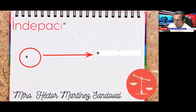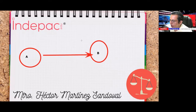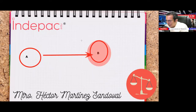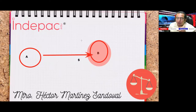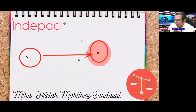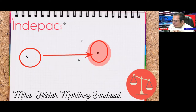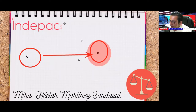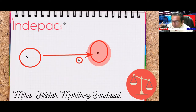Primer supuesto: B paga puntualmente su renta, siempre la paga puntualmente. Y dentro de los compromisos que tiene A, pues es dotar de agua potable a B, el pago de luz, posiblemente hasta alimentos, y mantener el inmueble en condiciones ideales para habitar. B siempre paga puntualmente su renta, y A no cumple con los compromisos pactados. ¿Quién es acreedor y quién es deudor?